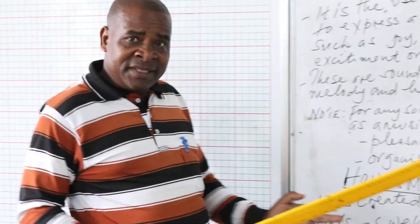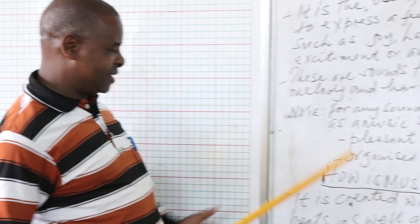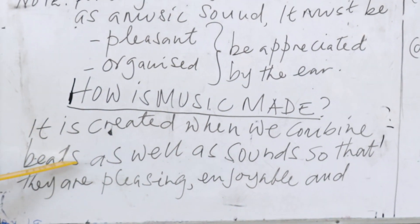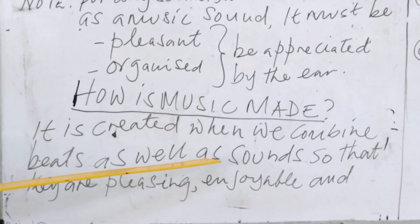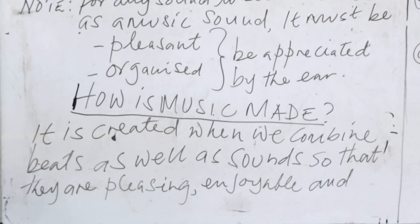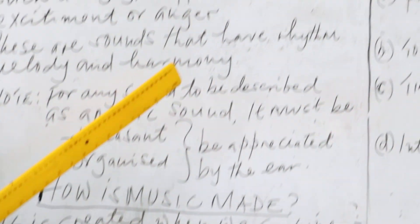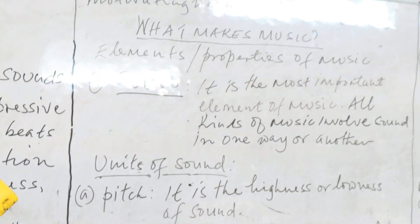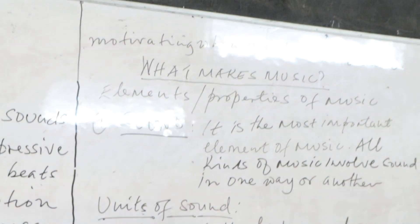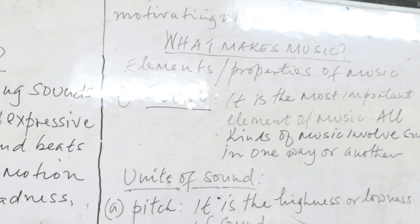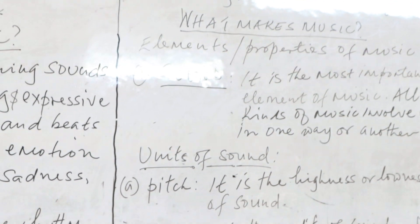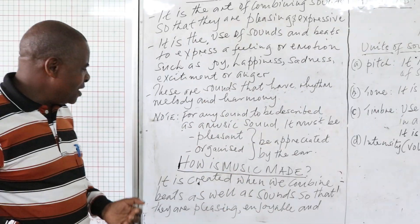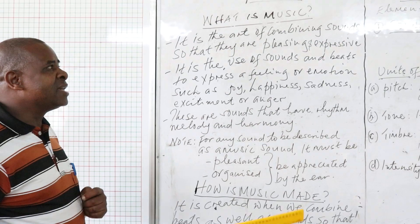So I want to take you through how music is made. If it's an art, it's created. It is created when we combine beats as well as sounds so that they are pleasing, enjoyable, and motivating when we listen to them. That's how music is made — when sounds have been organized, put together, and then people can easily listen and enjoy.